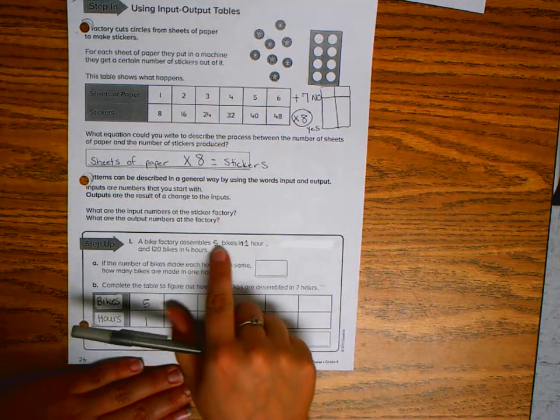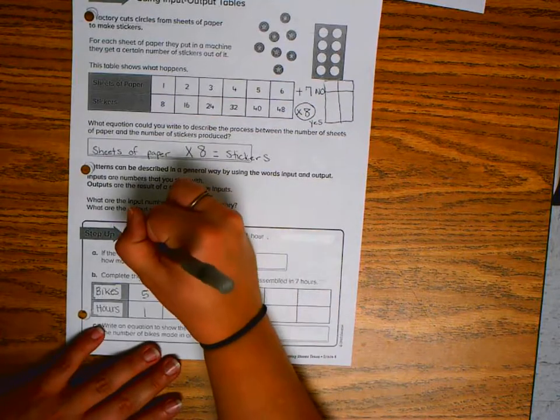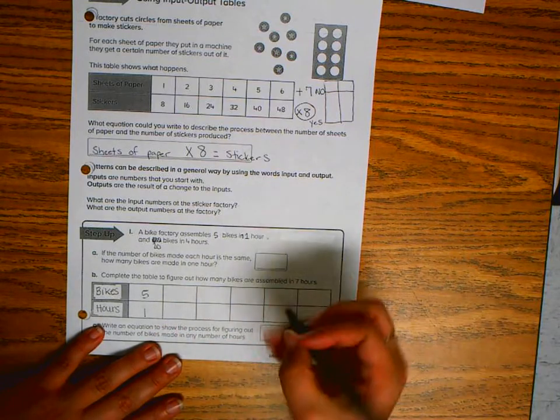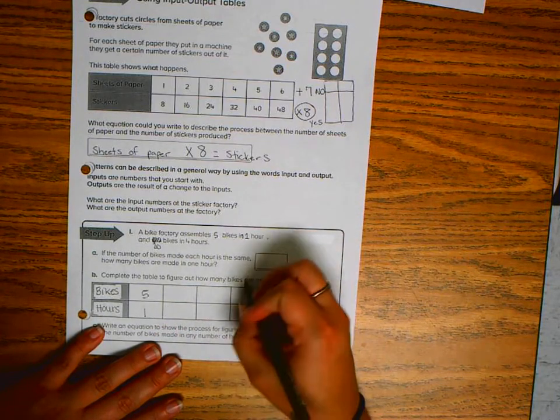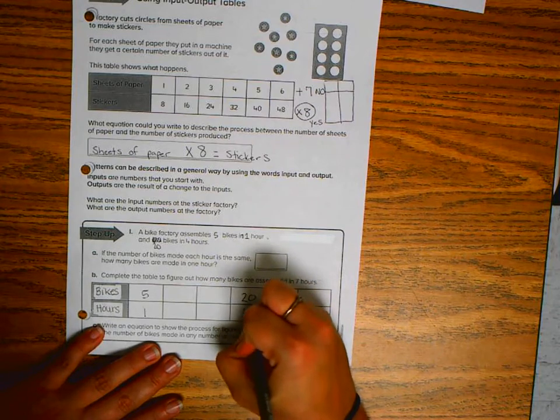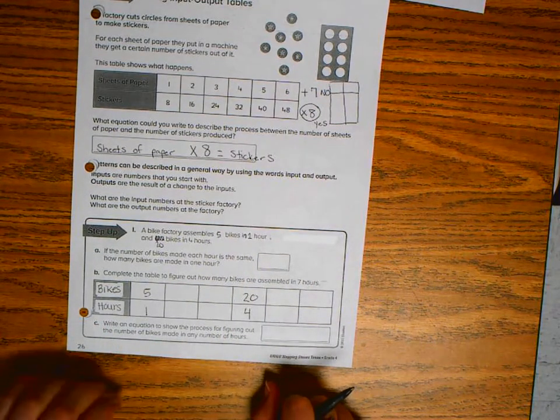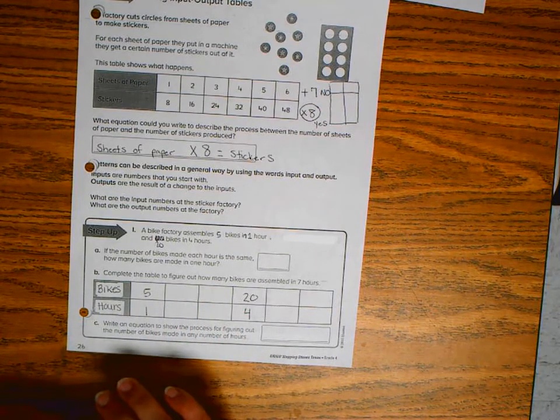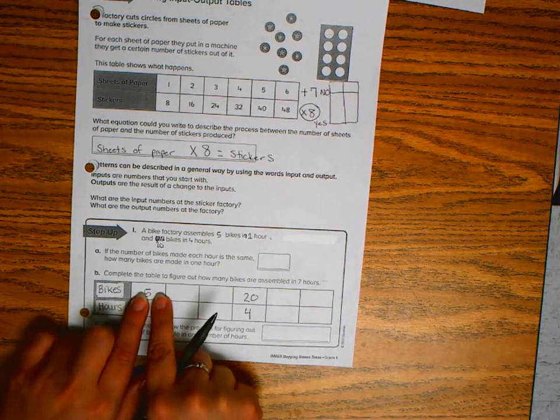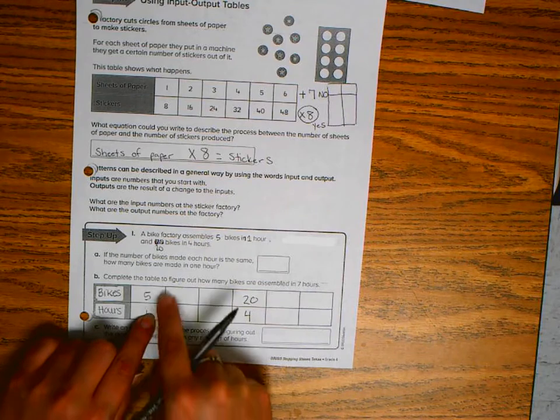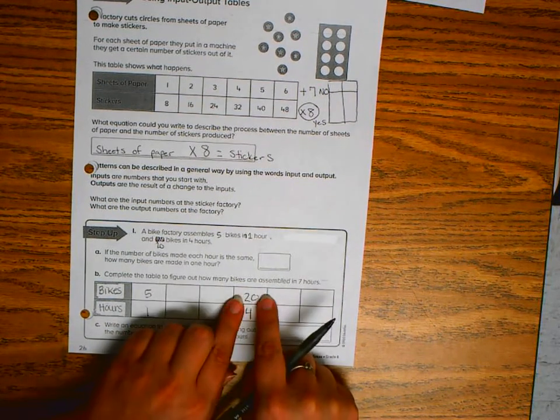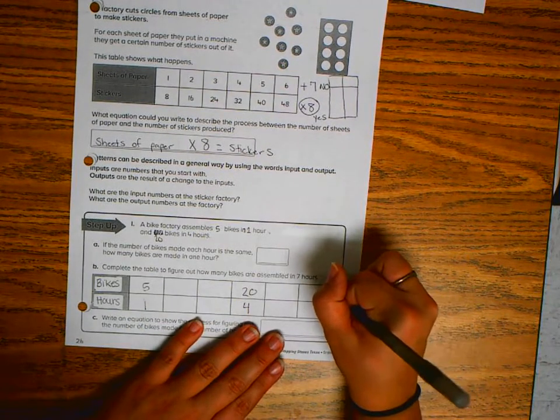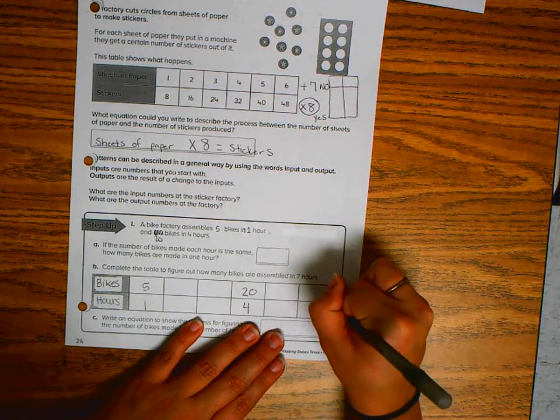A bike factory assembles five bikes in one hour and twenty bikes in four hours. If the number of bikes made each hour is the same, how many bikes are made in one hour? Five bikes took me one hour, twenty bikes took me four hours. So I'm actually going to a smaller number, so I would either be subtracting or dividing.